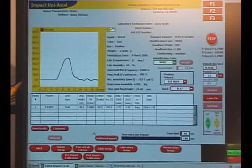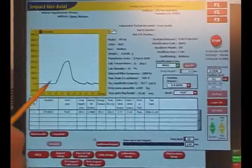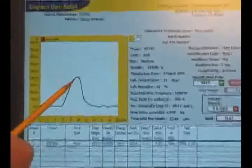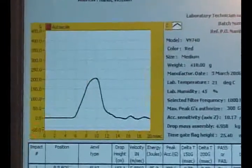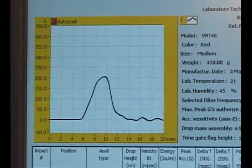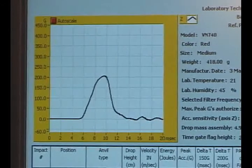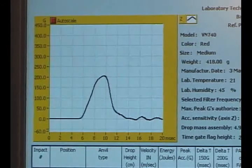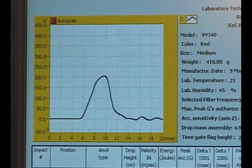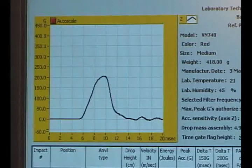If we look at the results from this impact test, we can see that the peak head form acceleration was 203 G's. Remember that the requirement for the TCVN standard is 300 G's, so this helmet meets the pass-fail requirements for impact protection according to the Vietnamese standard.